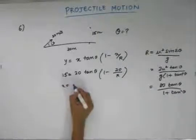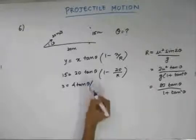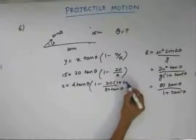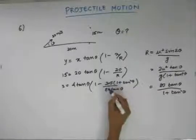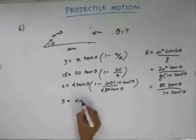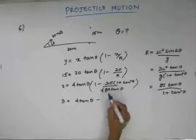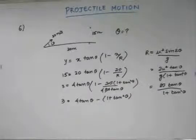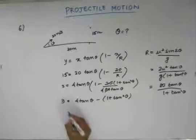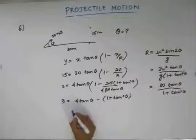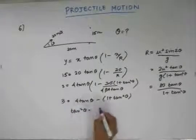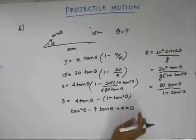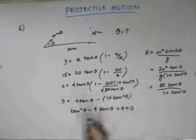Substituting R into the equation, we get 3 equals 4 tan theta times (1 minus 20 divided by 80 tan theta over (1 plus tan squared theta)). Simplifying, this becomes 4 tan theta minus (1 plus tan squared theta). Bringing the right-hand side to the left-hand side, we get tan squared theta minus 4 tan theta plus 4 equals 0. Solving this, tan theta equals 2 satisfies the equation.